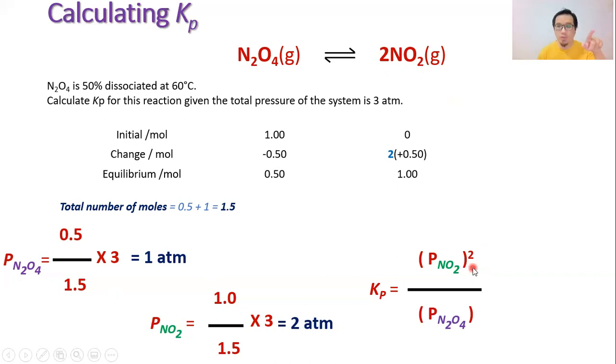Sub in the values. The partial pressure of NO2 is 2 atm, partial pressure of N2O4 is 1 atm. Sub in the values just like this, you get your answer which turns out to be 4 atm. The unit remaining will be just one unit of pressure, so I'm leaving the answer as atm.